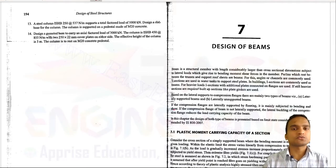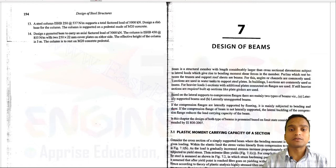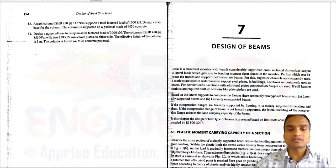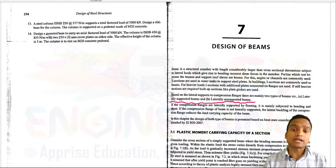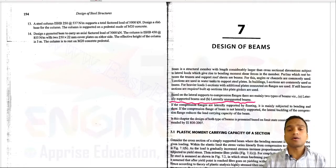Hello dear students. So far we have discussed design of beams — laterally supported beams and laterally unsupported beams. These are the two types of beams in which the compression flanges are either laterally supported by flooring or left unsupported.